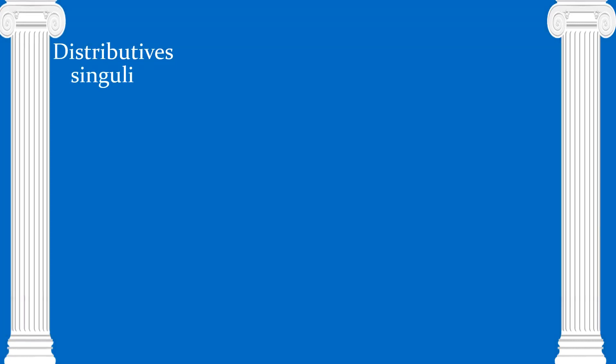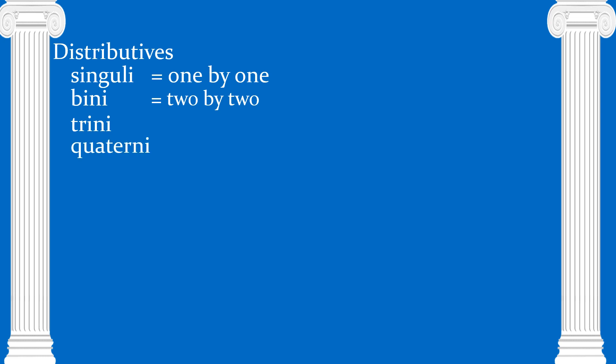One of the things we've talked about are the distributives: singly, one by one; bini, two by two or two at a time; trini; quaterni; quini. These are pretty easy to identify because they have a number and the ending is -i. There's no single word for these in English.